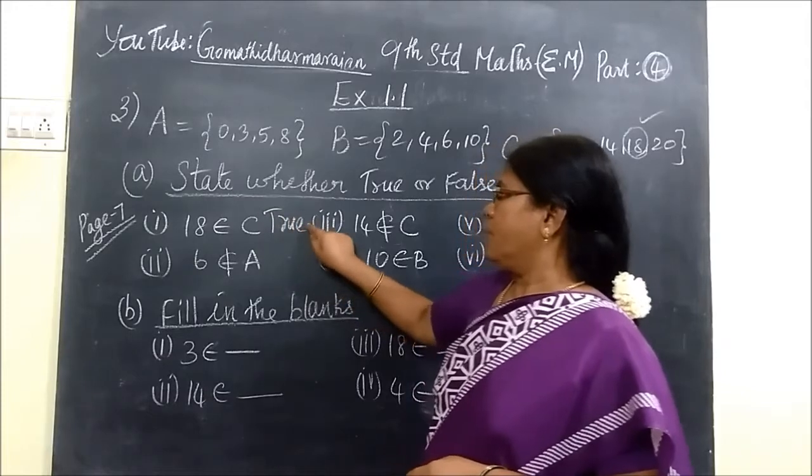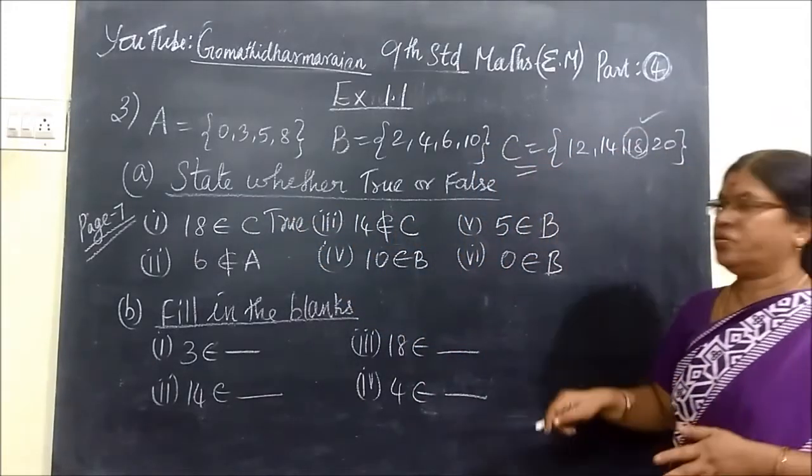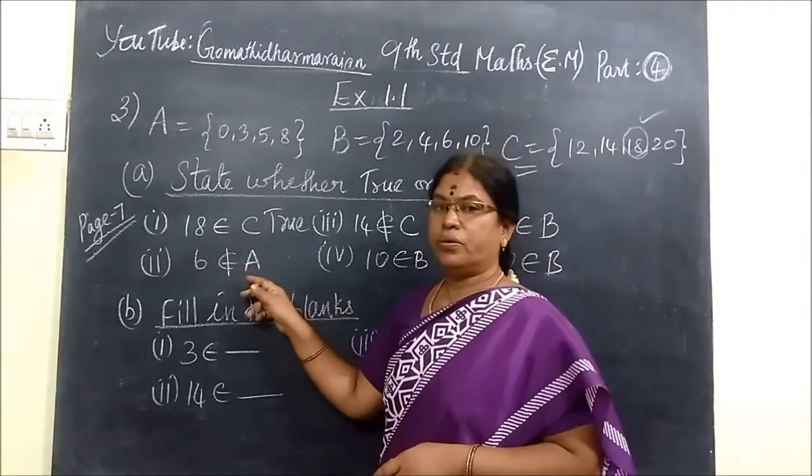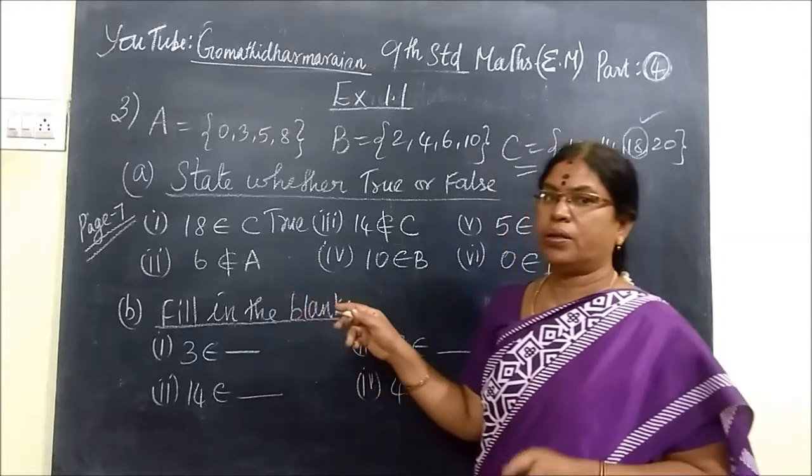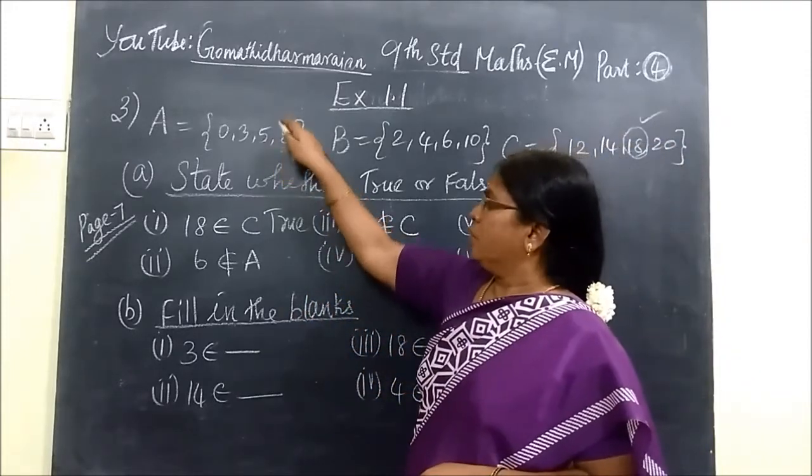Second one: 6 not belongs to A. 6 is not the element of A. Here no 6 at all, so it is true. Since it is given 6 is not the element of A, so consider this 6 is not the element of A, so this one is true.